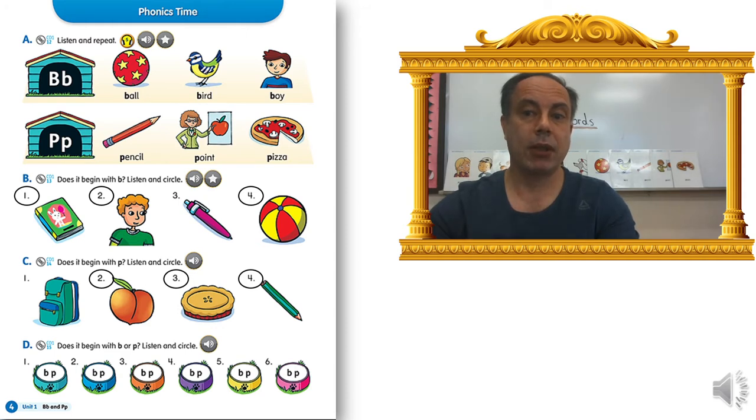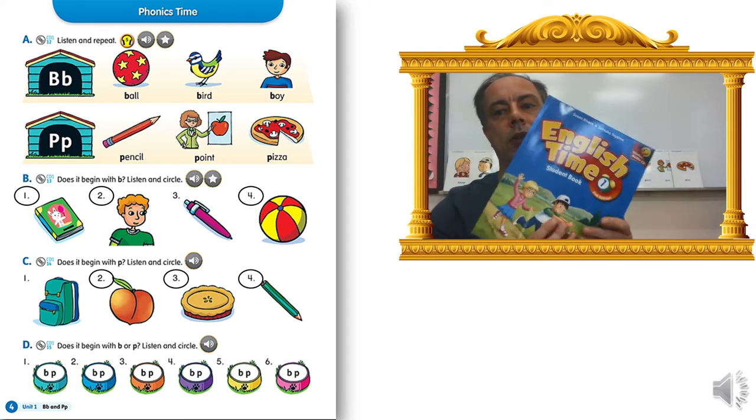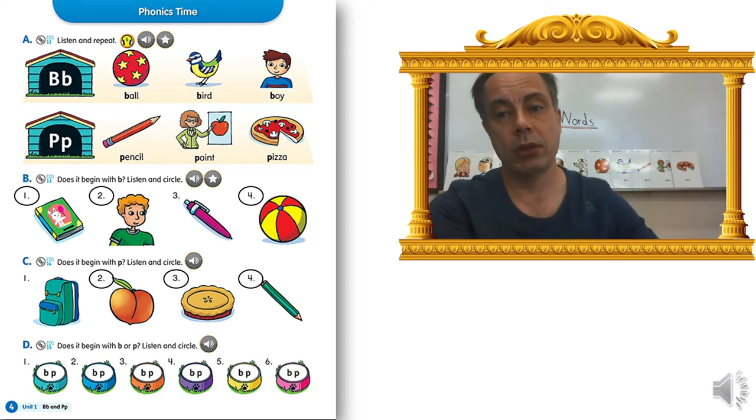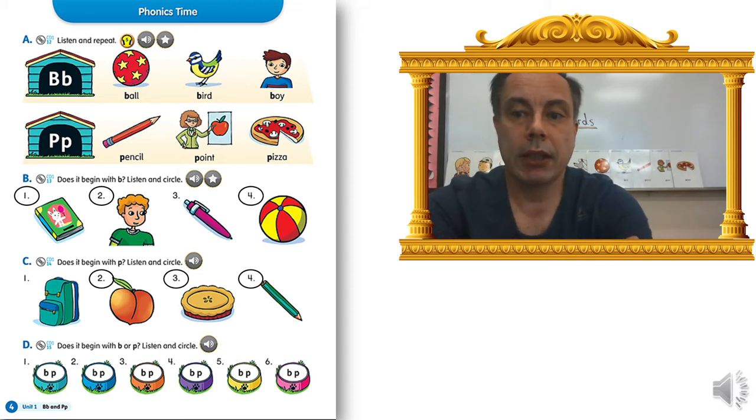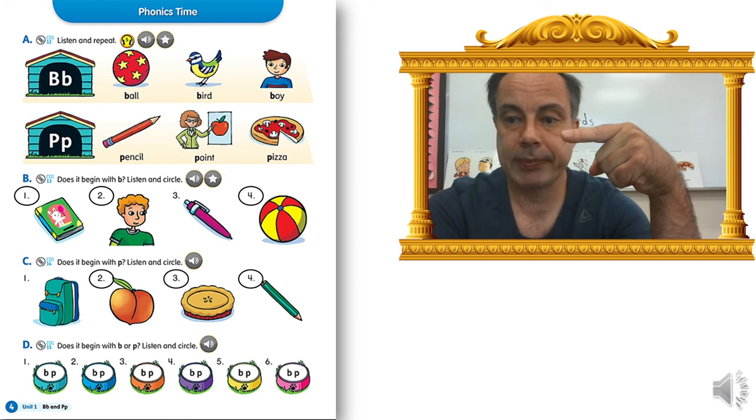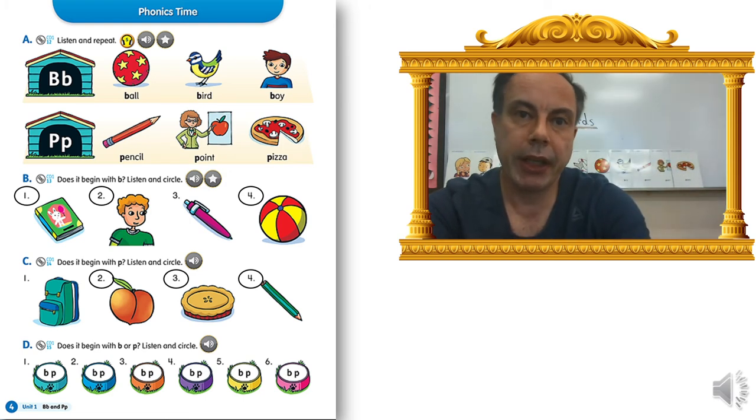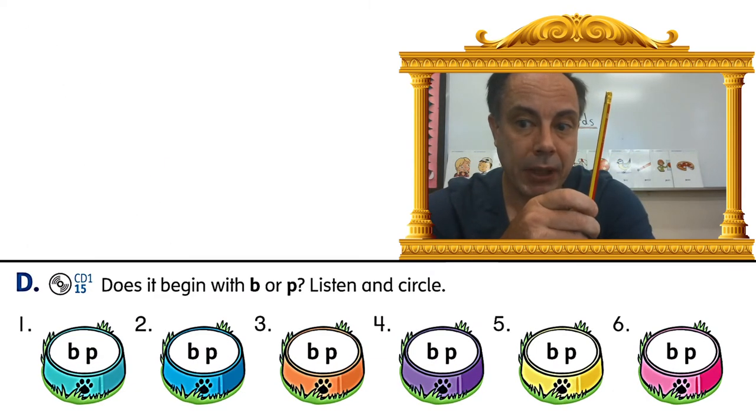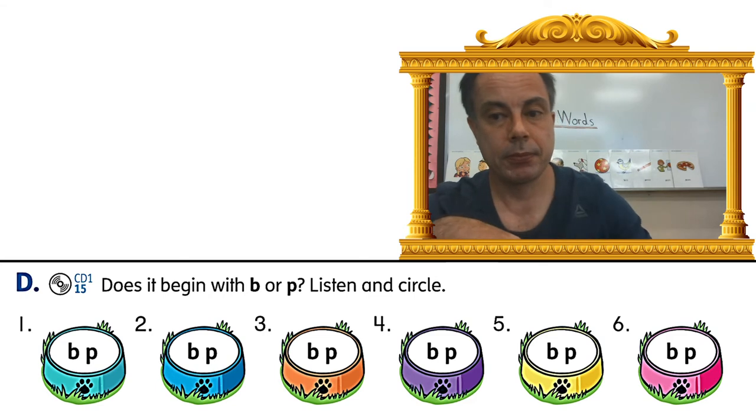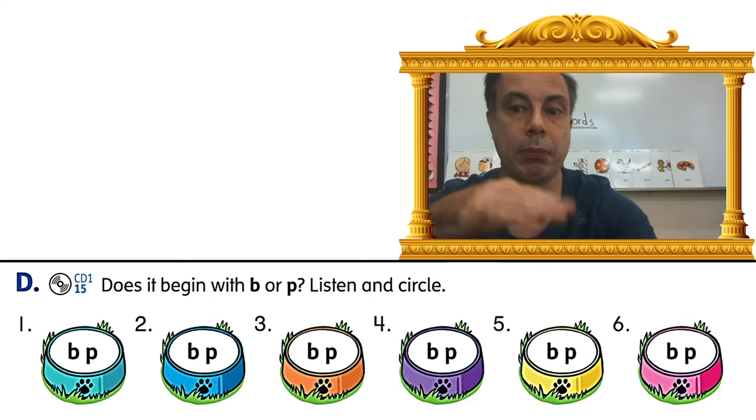Okay, let's start. The first thing I want you to do is take out your student book and open it on page four. It should look like this. Yesterday we did exercise B and C, and today we will do exercise D. You need a pencil. Please take out the pencil.